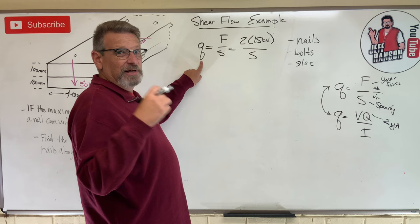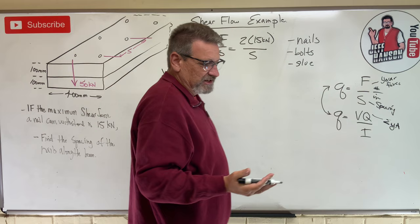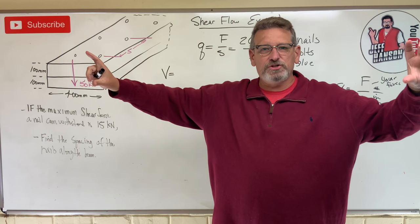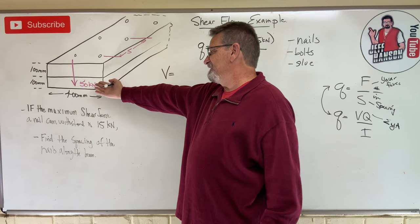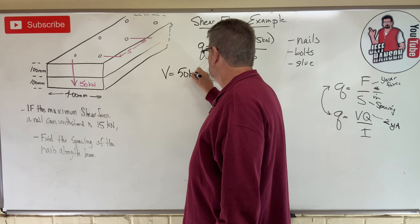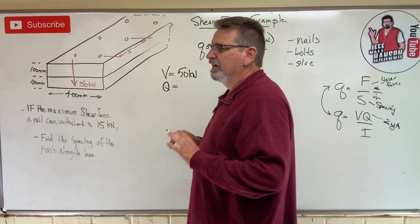Now what is q? I don't know, but maybe we can use this equation to find q. So let's do our Vq over I. V, now in this particular problem, V is given. What if I gave you a loaded beam and asked you what V to use? What would you do? I'd just draw a shear moment diagram and find the biggest V on the beam, and I'd use that V. But in this particular case, they tell us the shear force is 50 kilonewtons. So V is just given, 50 kilonewtons. You've got an equation with a bunch of unknowns in it. Make sure to watch your units.